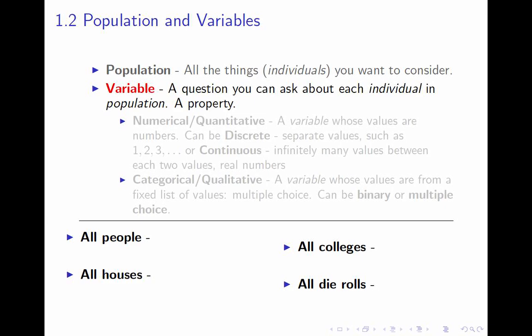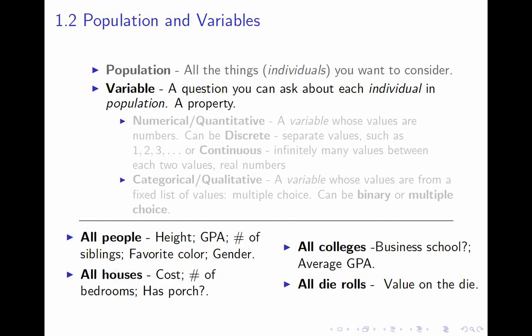Once you've chosen a population, there are questions you're interested in asking about each individual — those questions are called variables. They are properties of the individuals. If your population is people, interesting variables might include their height, their GPA if they're a student, number of siblings, favorite color, or gender.